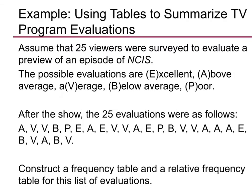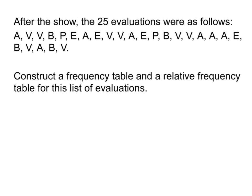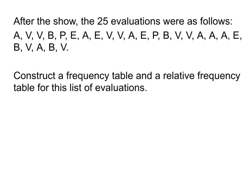In this example, we've got a sample of 25 viewers of the show NCIS — everybody's parents' favorite TV drama — and they're rating this show as excellent, above average, average, below average, and poor. Here we get our 25 results. To make our tally table, you would literally just count how many of each rating. We'll title this evaluation and then the next column is frequency. Now we know that it is officially called a frequency distribution table.